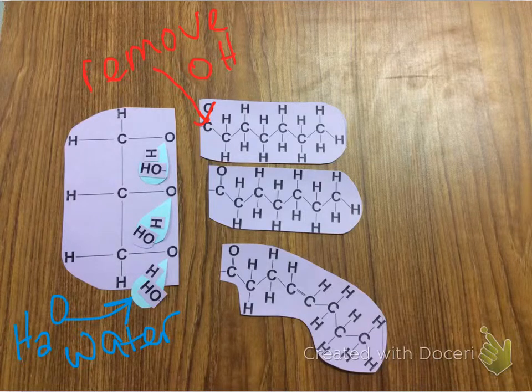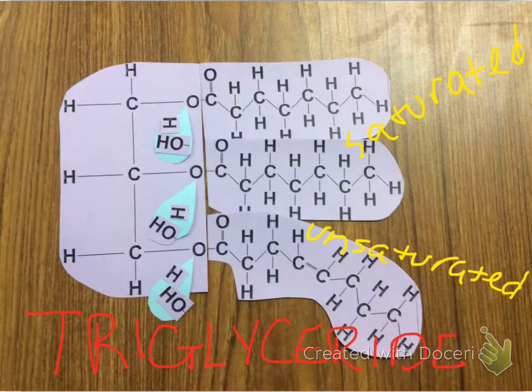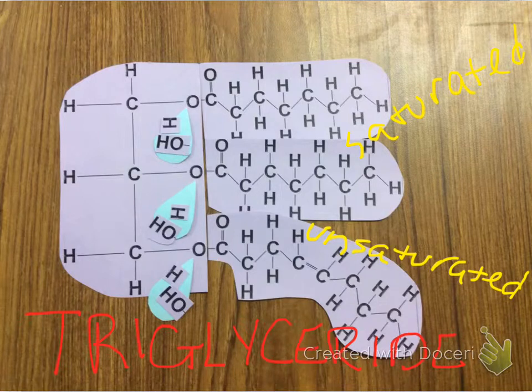Oxygen can form two bonds, carbon can form four, so each one has a space for one more bond. So what's going to happen is that carbon is going to come in and attach to that oxygen for each of those. We have three of them.